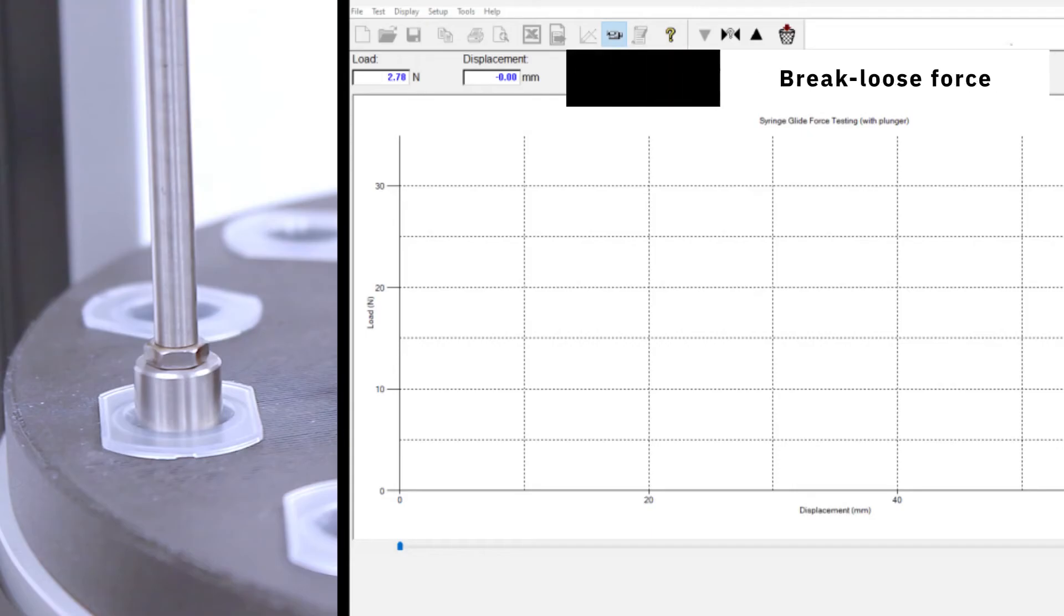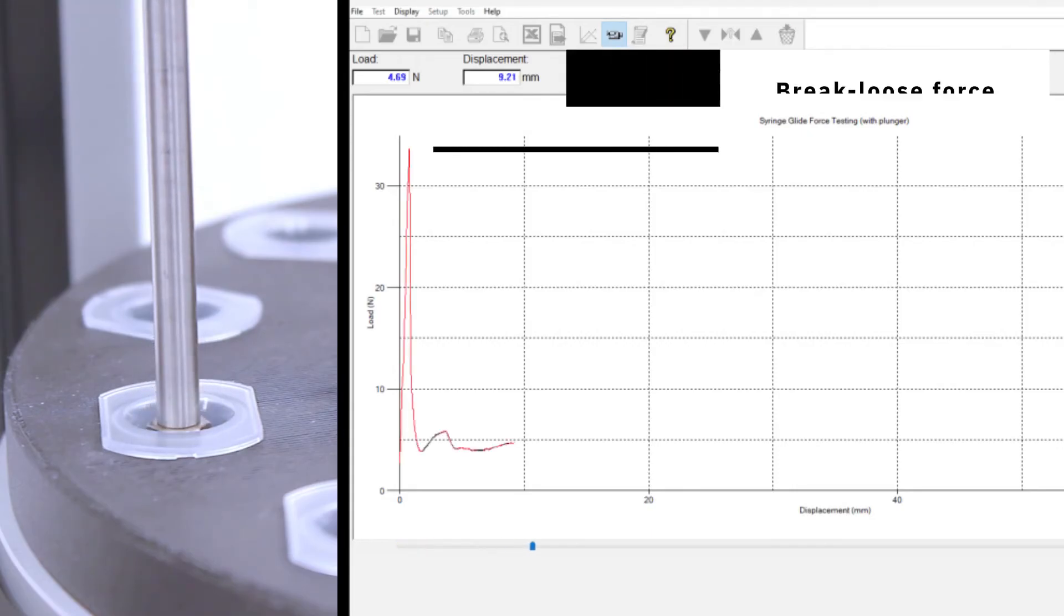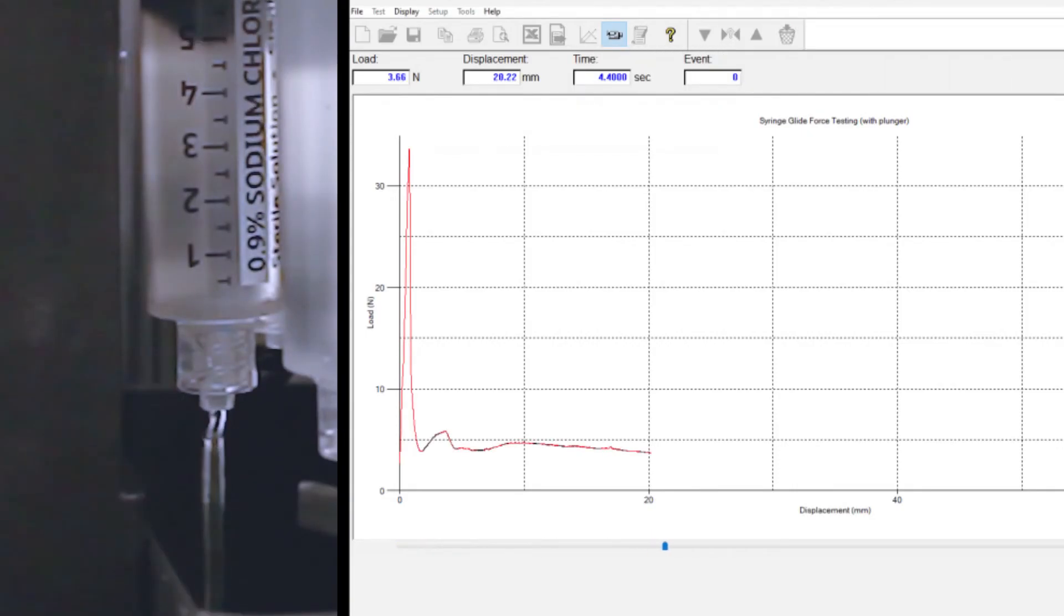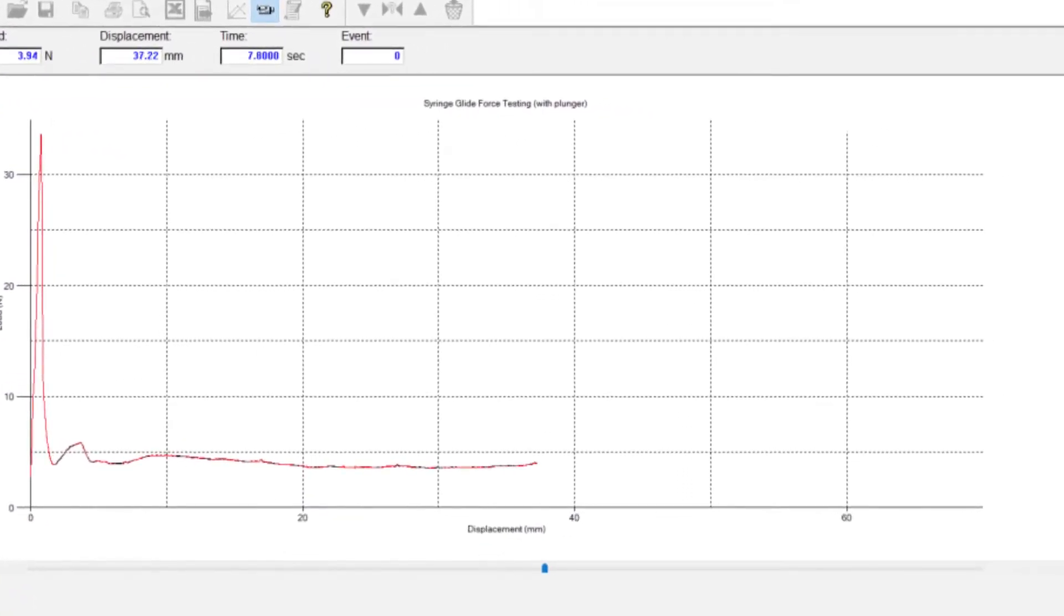It approaches the top of the syringe, touches on lightly and sets a reference point for the test, then compresses the plunger rod by a set distance and measures the forces it exerts.